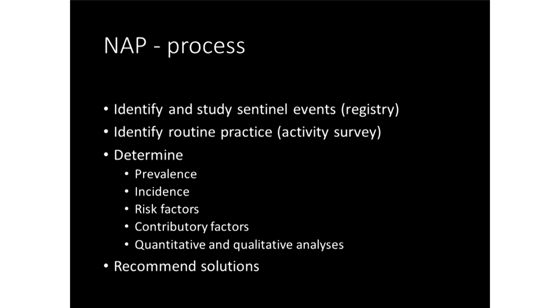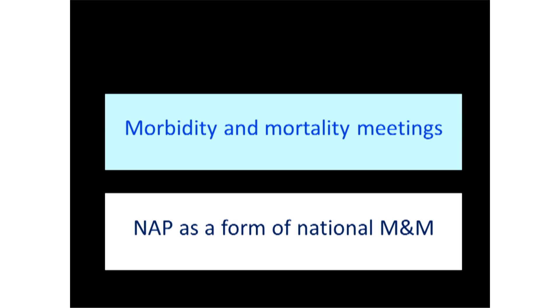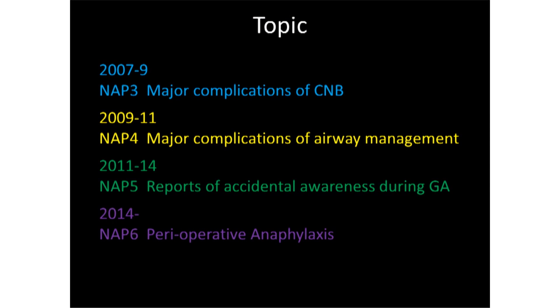There are essentially two phases: a year-long collection period identifying major events of potential harm to patients, and then a secondary survey of activity around that area. Then a review of all those cases, extracting large amounts of information, and eventually a report and recommendations. The topics covered have been central and axial block — epidurals and spinals — complications of managing the airway, accidental awareness, and perioperative anaphylaxis.